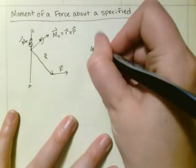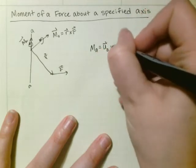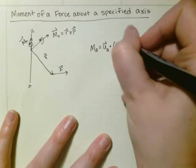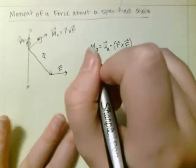So the magnitude of M_a is going to be equal to the unit vector of a dotted with r cross f. So if we write that out,